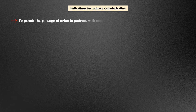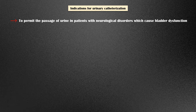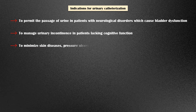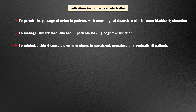Indications for urinary catheterization include the following: to permit the passage of urine in patients with neurological disorders which cause bladder dysfunction; to manage urinary incontinence in patients lacking cognitive function; and to minimize skin diseases and pressure ulcers in paralyzed, comatose, or terminally ill patients.